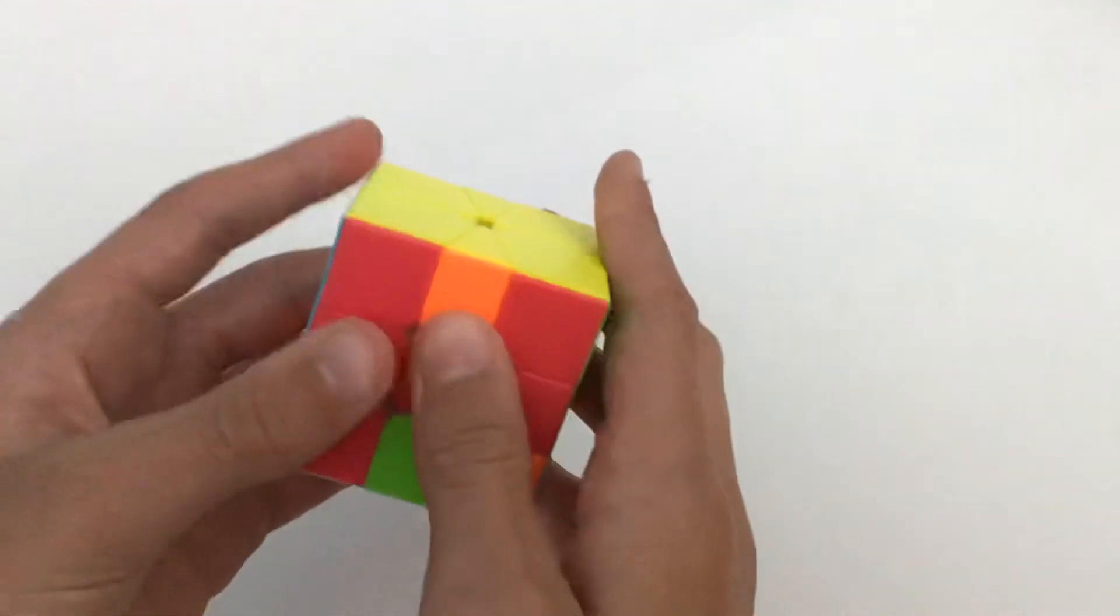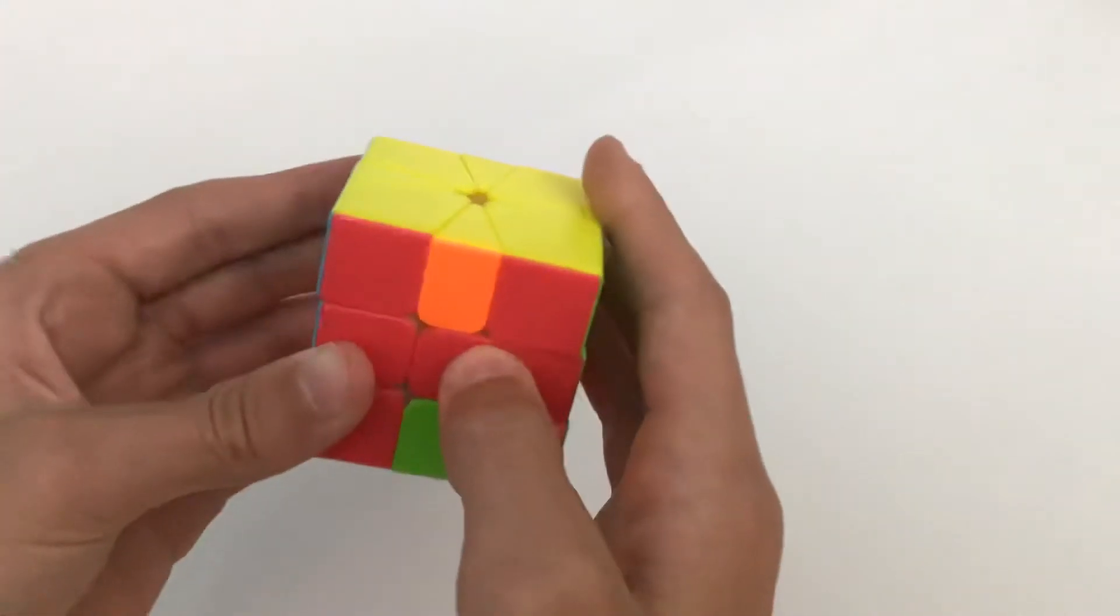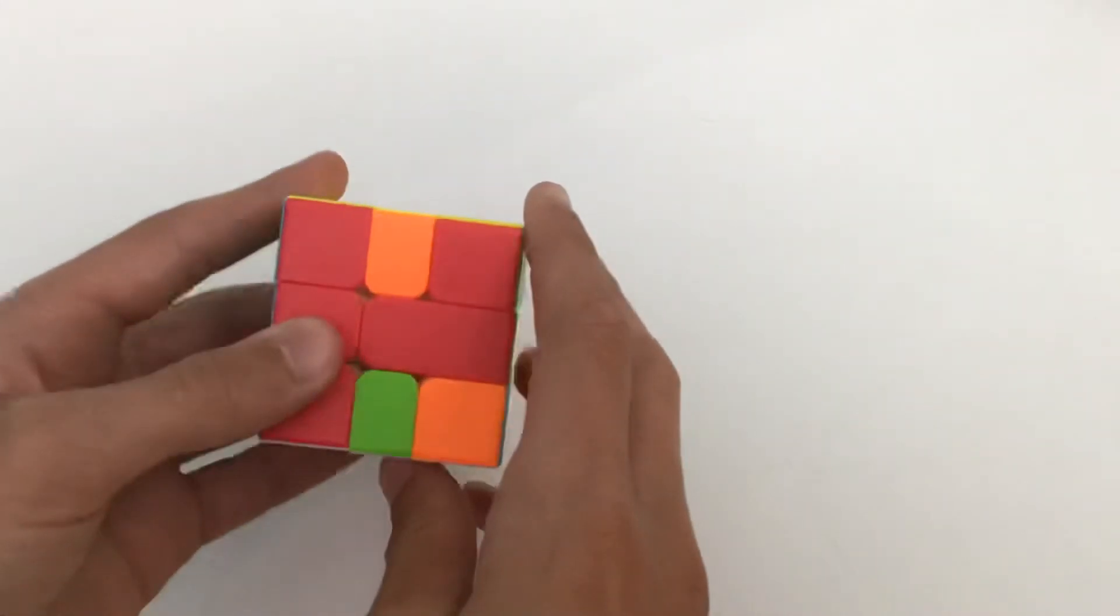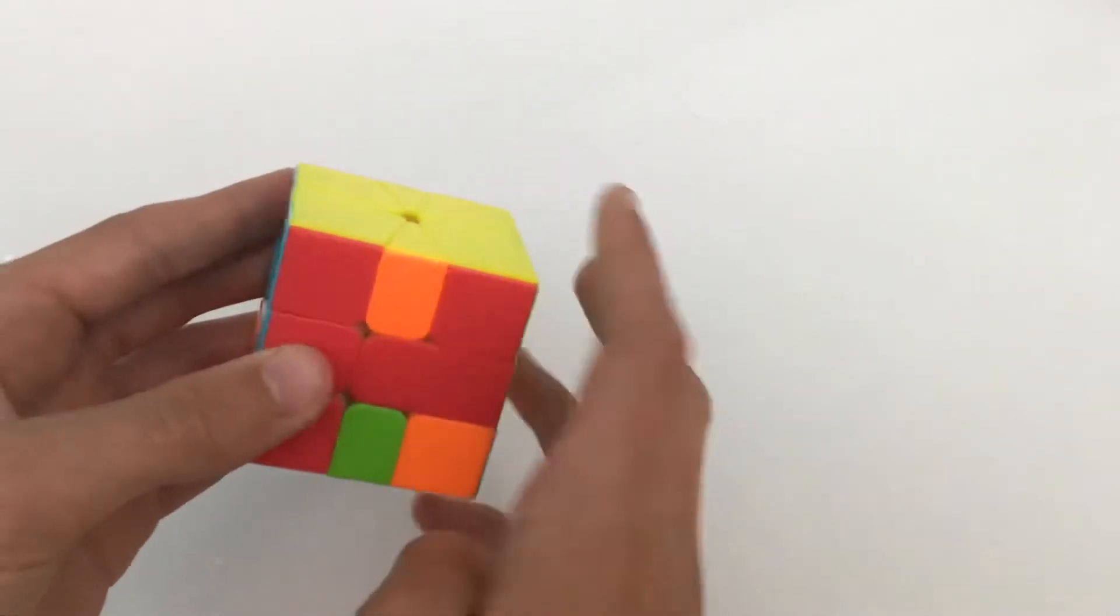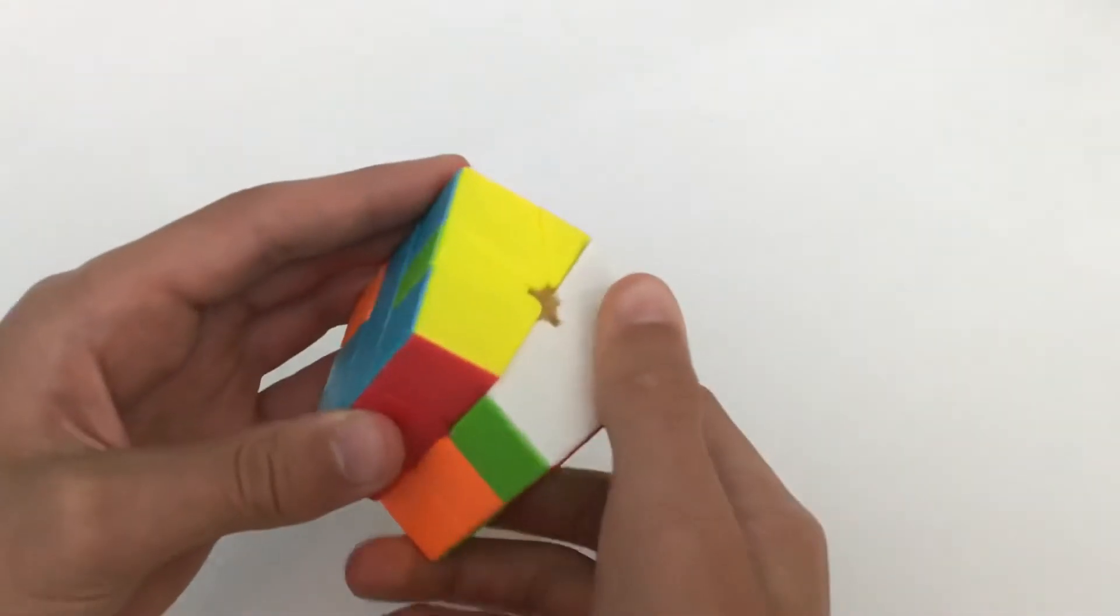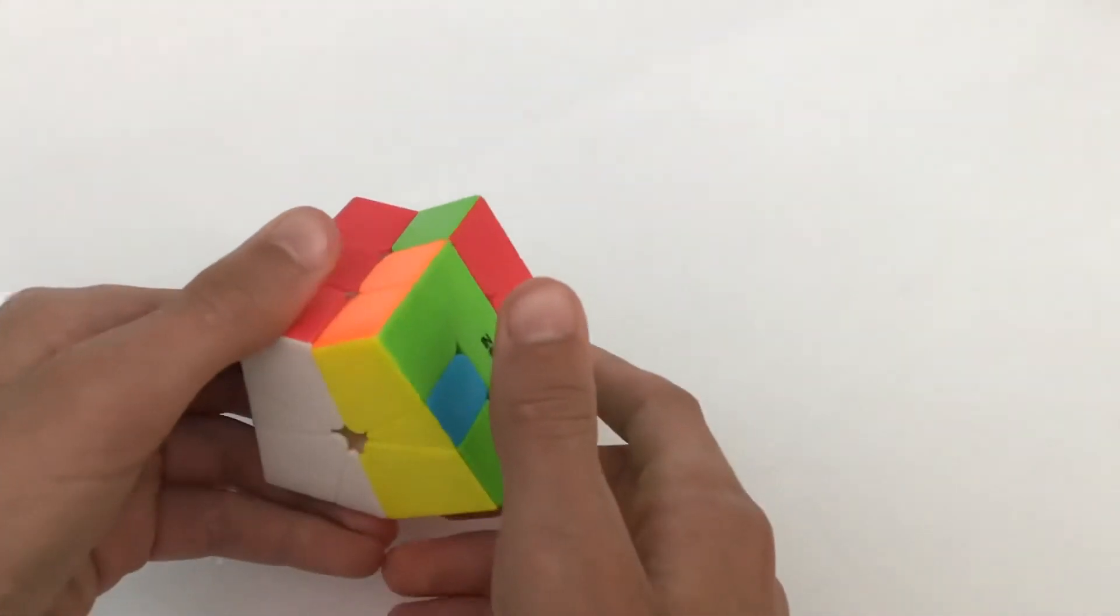So the way you do parity is basically reverse how you got it into cube shape. So holding the top like this and the bottom on the bottom. You don't need to memorize this algorithm you just need to reverse how you got it into cube shape. You do one slice and then the bottom and top look like that.